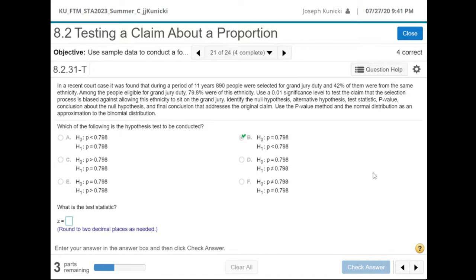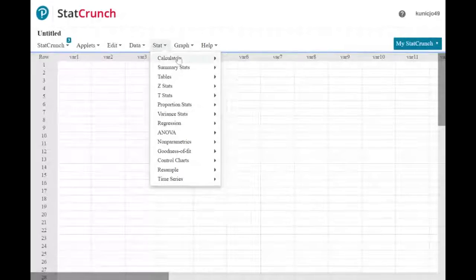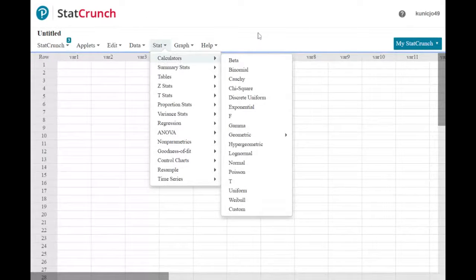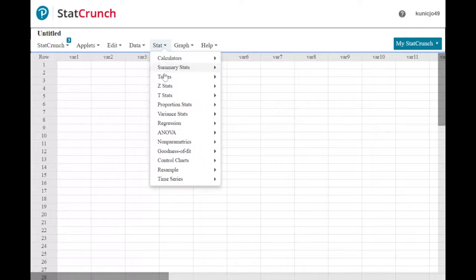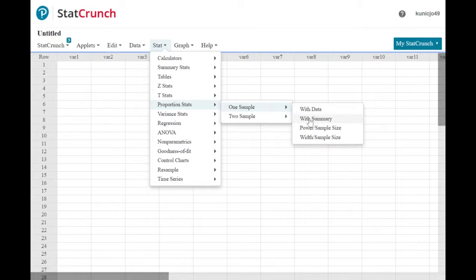What's the test statistic? Okay, so we have all the numbers, I believe. Let's go see what we can do with StatCrunch. Okay, so it's a proportion one sample with summary.